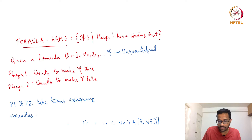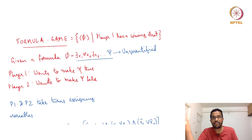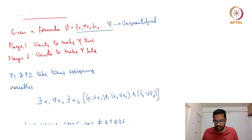To be more formal: phi is a quantified Boolean formula — there exists x1 such that for all x2, there exists x3, and so on — psi, where psi is an unquantified Boolean formula. Both players are trying to assign Boolean values to x1, x2, x3, etcetera. Player one is trying to make psi true and player two is trying to set psi to false.